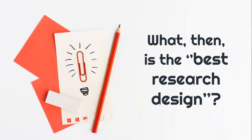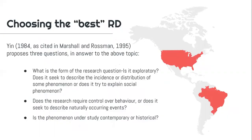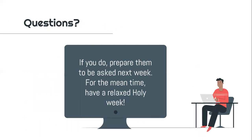So what then is the best research design? To answer that, you have to ask yourselves these questions first, according to Yin. Number one: what is the form of the research question — is it exploratory, does it seek to describe incidents or distribution of a phenomenon, or does it try to explain social phenomenon? Two: does the research require control over behavior, or does it seek to describe naturally occurring events? Three: is the phenomenon under study contemporary or historical? These three questions must be asked before deciding on the best research design for your study. If you have questions, prepare them for next week, and have a relaxed Holy Week.